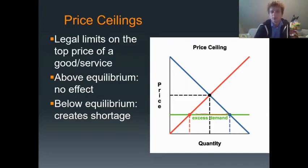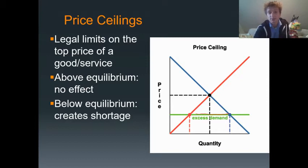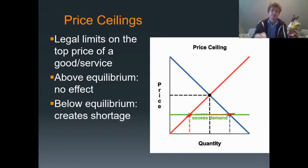So if a price ceiling is put below equilibrium, it creates a shortage. Because the price is lower than equilibrium, the quantity demanded is greater than the quantity supplied, and we end up with a shortage.